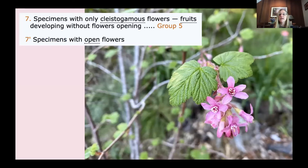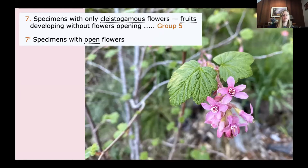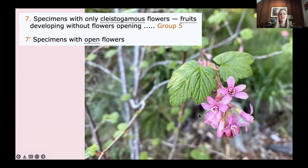Next: specimens with only cleistogamous flowers, fruits developing without flowers opening, or specimens with open flowers. Cleistogamous flowers are unusual — they may appear to look just like flower buds. If you think back to pollination, an open flower invites animals to carry pollen away, whereas a cleistogamous flower is basically a selfing flower — self-fertilizing, petals may never open. It's an unusual characteristic designed to be eliminated early on in the key. In this case, we do have nice open flowers.